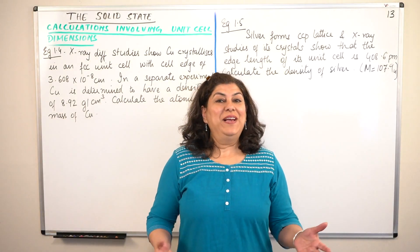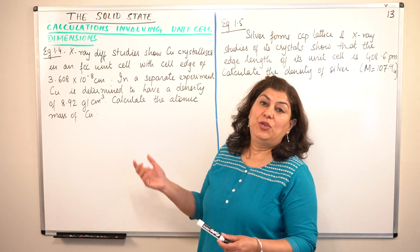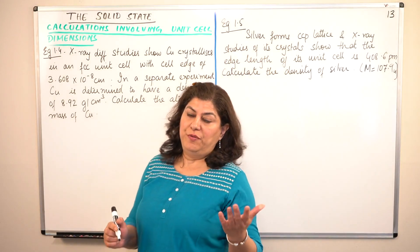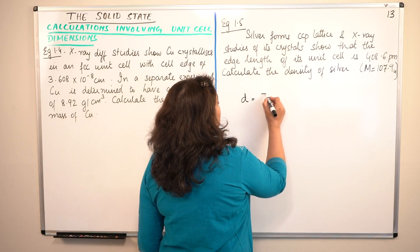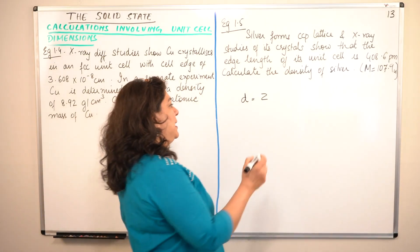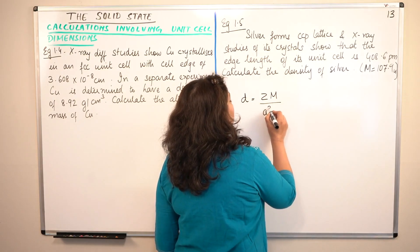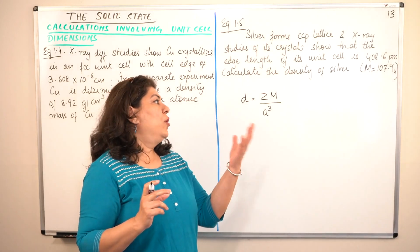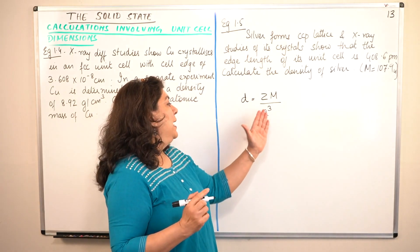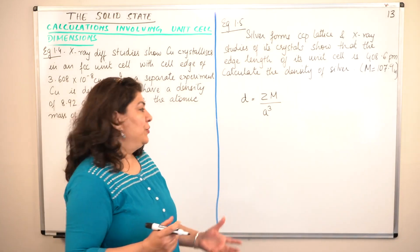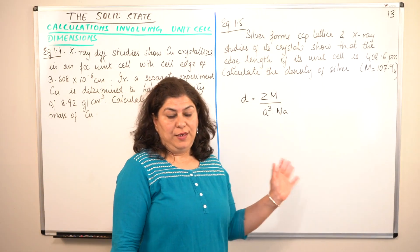Hello, I am Seema and welcome to part 13 of the chapter, The Solid State. We were doing calculations involving unit cell dimensions and we reached an equation in the previous video where we said that density of the solid is equal to Z, where Z is the number of atoms in the unit cell, capital M where M is the molar mass of the element, upon A cube where A is the edge length of the cubic unit cell, into Na where Na is Avogadro's number.